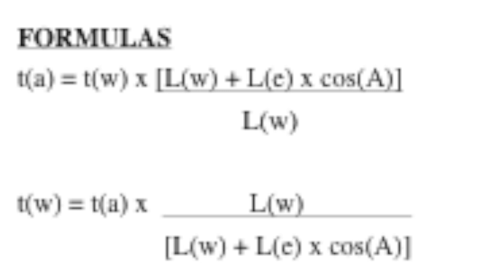The big takeaway: the applied torque TA equals Tw times the quantity (Lw + LE × cos A), divided by Lw. Looking at the cosine term — when the extension is exactly perpendicular or 90 degrees to the torque wrench, cosine of 90° equals zero. Therefore LE × cos A equals zero, leaving Lw divided by Lw, which equals one. Therefore the actual applied torque equals the torque setting on the wrench.